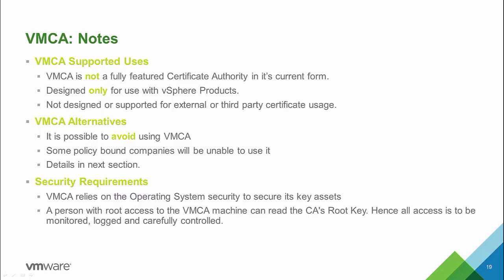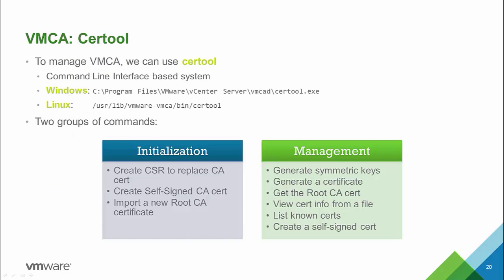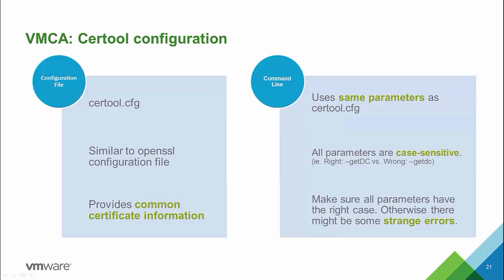The VMCA is not a fully featured certificate authority — it is designed for use only with vSphere products. You can avoid using the VMCA depending on the policies in your company. VMCA relies on the operating system security for its assets; anyone with root access to a VMCA machine can read the CA's root key, so you should monitor all access to the machine. The tool used to manage the VMCA is the cert tool. It can be used for all operations including initialization and management. You can configure the cert tool via a configuration file, cert tool.config, which is similar to an OpenSSL configuration file, or via the command line using the exact same parameters. Take care with the case of parameters on the command line, otherwise you may notice strange errors.